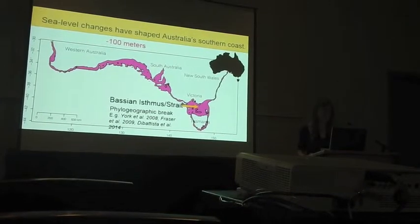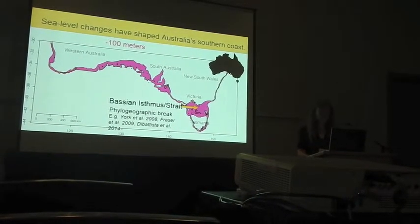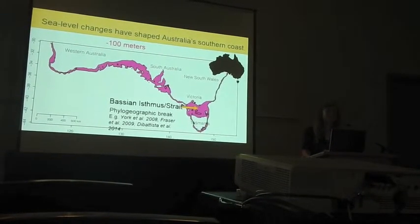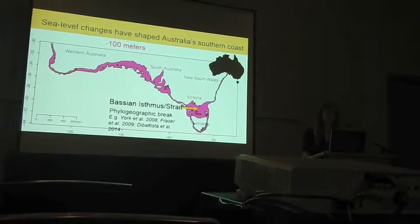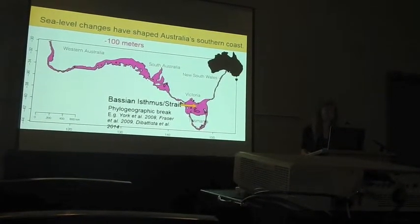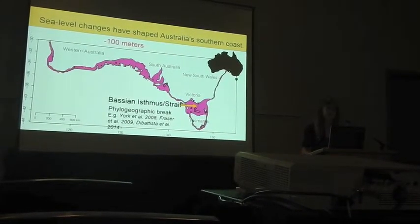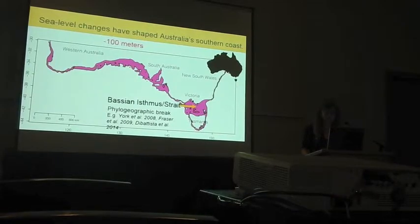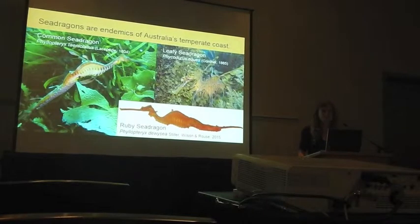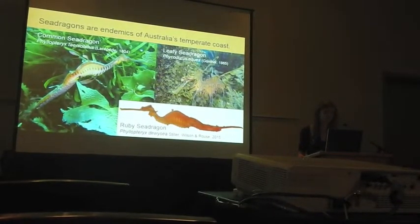This is where our study comes in. The temperate coast of Australia is relatively cold and it harbors a unique ecosystem of temperate reefs — hard substrate shallow reefs covered by macroalgae such as kelp with some interspersed seagrass beds. The temperate coast of Australia also harbors some amazing animals, like the sea dragons, which are all endemic to this coast.